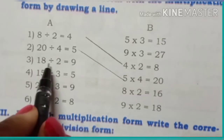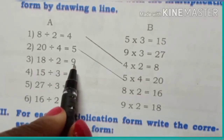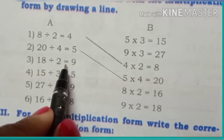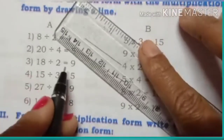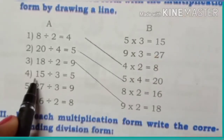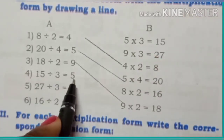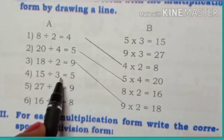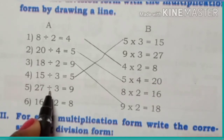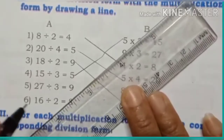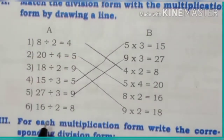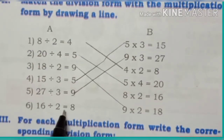Third question: 18 divided by 2 is equal to 9, matched accordingly. Fourth question: 15 divided by 3 is equal to 5, matched with 5 multiplied by 3 is equal to 15. Sixth question: 16 divided by 2 is equal to 8, matched with 8 multiplied by 2 is equal to 16.